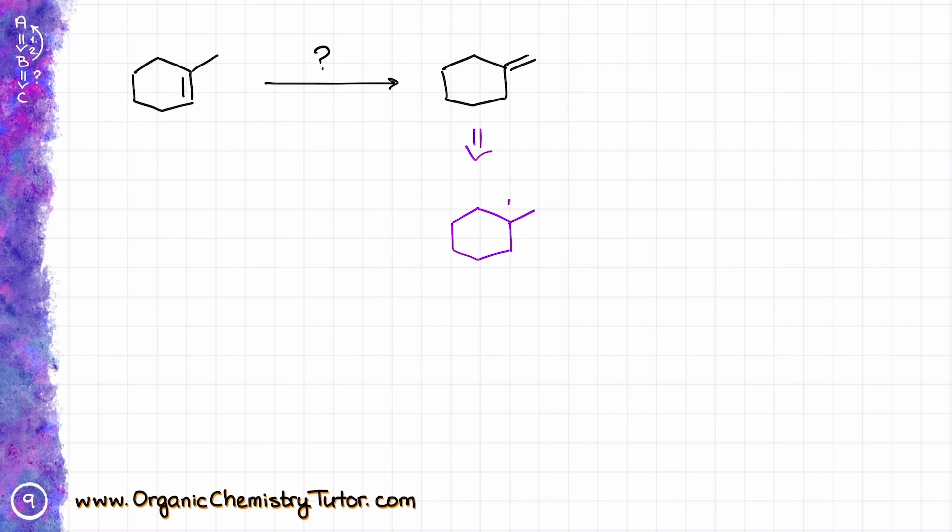I can do an elimination where the leaving group X is sitting here, or another possibility will be if I have something with my leaving group sitting right here.